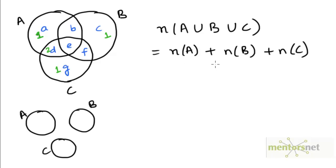Region D would have been counted in both N(A) and N(C). Similarly, region B would have been counted in N(A) and again when we added N(B). Region F would have been counted once for set C and again when adding N(B). As for region E, it belongs to all three sets, so region E would have been counted three times — once in each of N(A), N(B), and N(C).